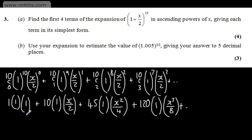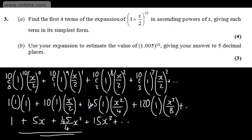Let's go ahead and tie this up. 1 times 1 times 1 is 1. Then we're going to have 10 times x/2, which is 5x. Then we're going to have plus 45/4 x². We've got 120/8, which is 15, so that's 15x³. So that gives us the first four terms in their simplest form.